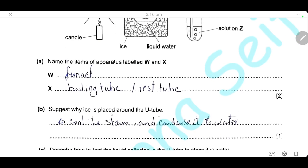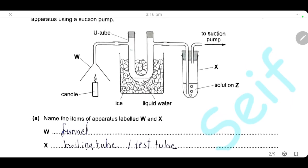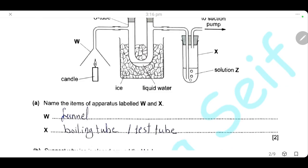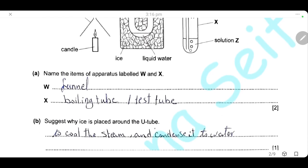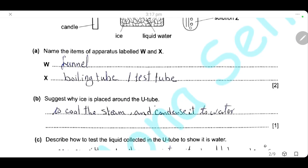Suggest why ice is placed around the U-tube. When the gases pass through, they contain steam or water vapor. The ice is used to cool the steam and condense it into water. So the liquid formed here is water.